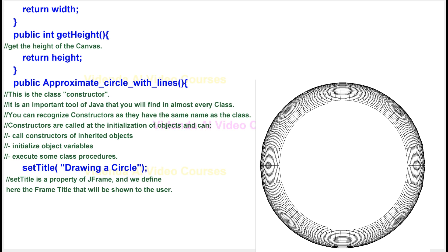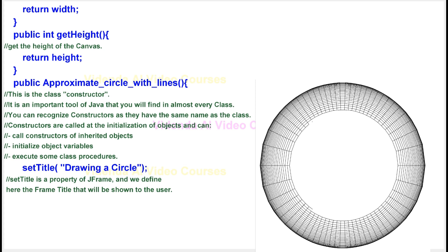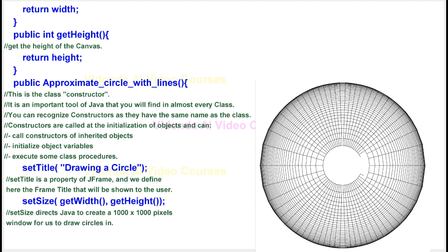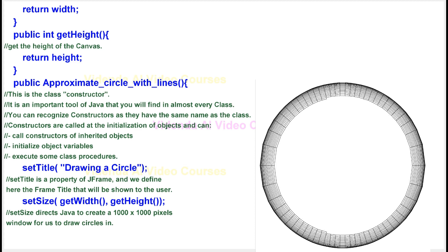Set title is a property of JFrame, and we define here the frame title that will be shown to the user. Set size directs Java to create a 1000x1000 pixels window for us to draw circles in.